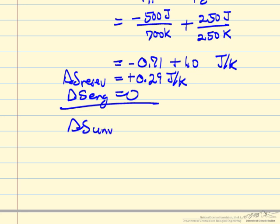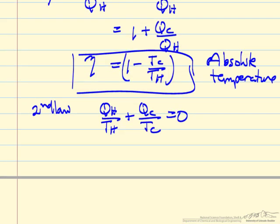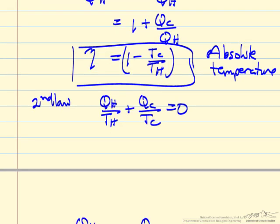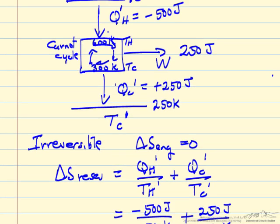Delta S for the universe is 0.29 joules per Kelvin. It's greater than zero because it's irreversible. The idea is we cannot put 700 K and 250 K into this equation here for the efficiency. So now we have higher temperature in order to make the process work, but we didn't get more efficiency. We're getting the efficiency of the high temperature of the Carnot cycle.